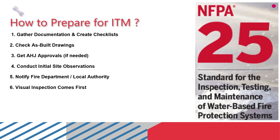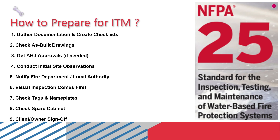Number six: visual inspection — a visual inspection shall be done for all components in preparation for ITM. Number seven: check tags and nameplates — ensure all control valves, pumps, and other components have proper identification tags and readable nameplates. Number eight: check the spare cabinet — look inside the spare sprinkler cabinet and make sure it has the correct number and types of spare heads and a working wrench. Number nine: client or owner sign-off — once preparation and work are done, get the final documents signed by the client or property owner for records and compliance.